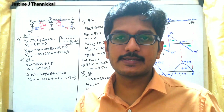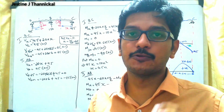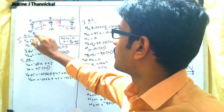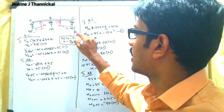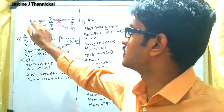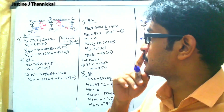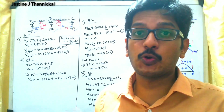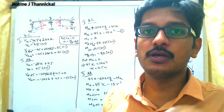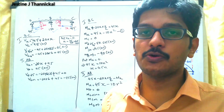Now we discuss how to draw the SFD and BMD for this continuous beam. The reactions are Ra = 45 kN, Rb = 150 kN, and Rc = 45 kN at points A, B, and C respectively. We calculate shear forces and bending moments at key points, starting with section BC.